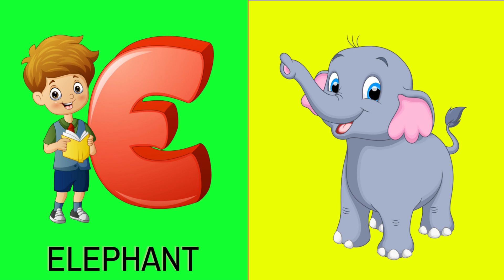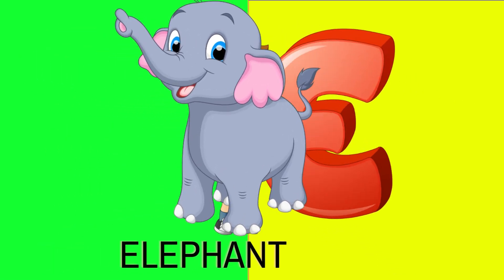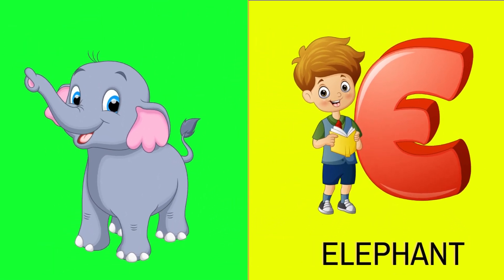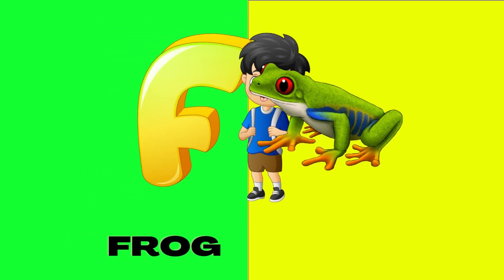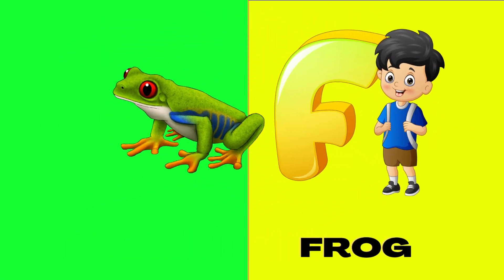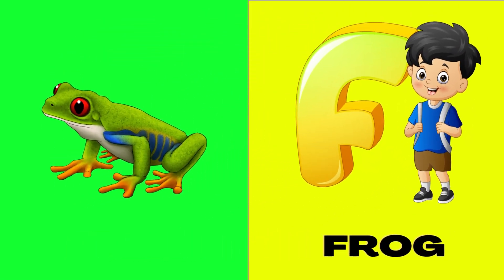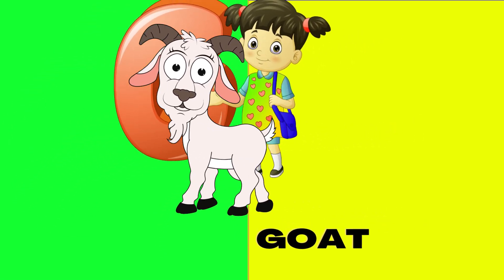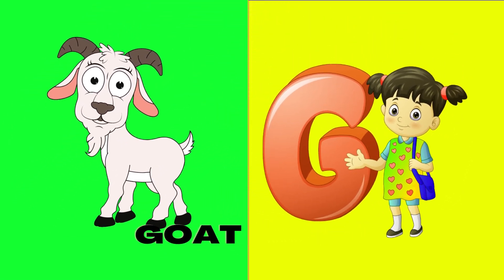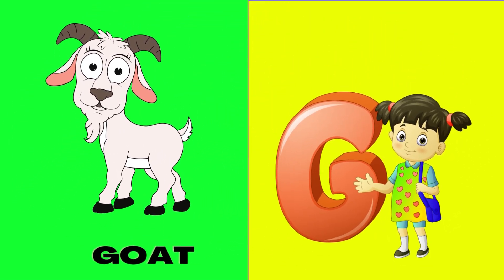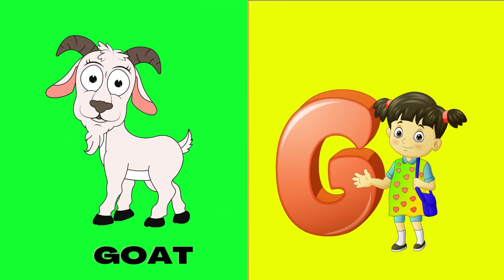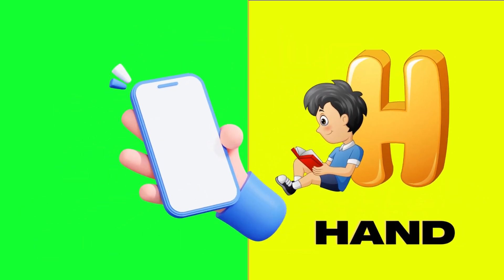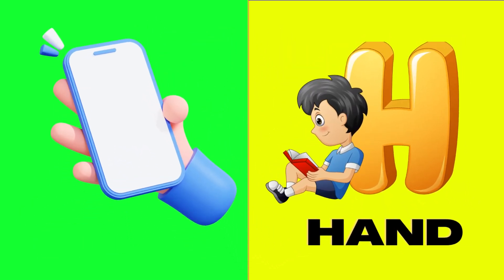E is for elephant, e-e-elephant. F is for frog, f-f-frog. G is for goat, g-g-goat. H is for hand, h-h-hand.